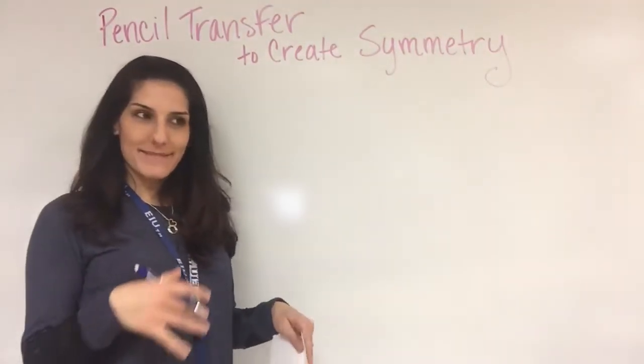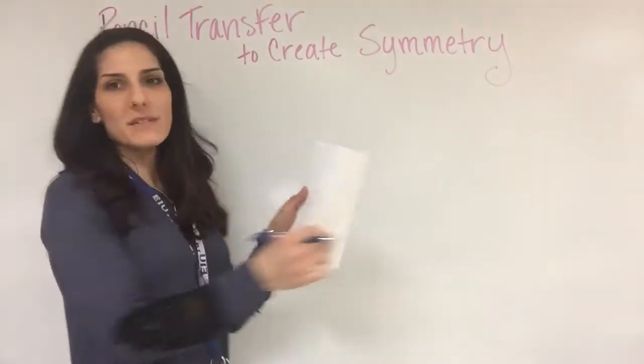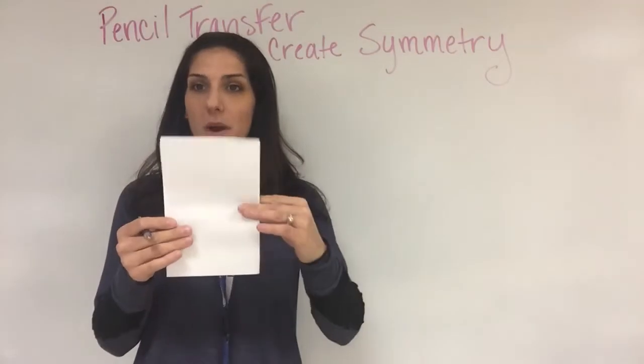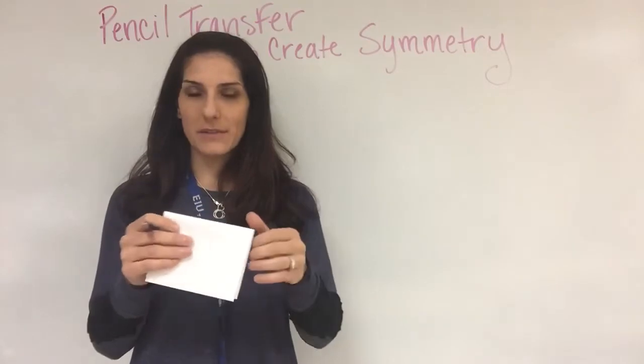If you want to create beautiful symmetry, the pencil transfer method is the best way to do so. All you need to do is take a piece of paper, fold it in half once, or fold it in half multiple times if you want to create quadrilateral or bilateral symmetry.